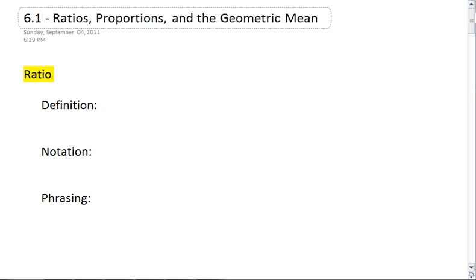Section 6.1, Ratios, Proportions, and the Geometric Mean. A ratio is a relationship between two quantities, and it is a constant relationship.